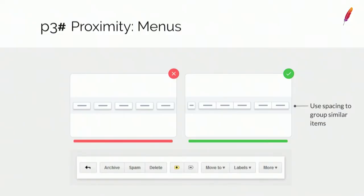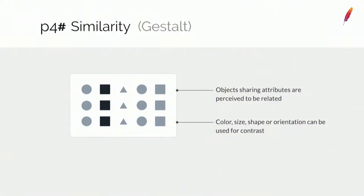Make sure items are actually related and not just grouped for visual reasons. Another principle is similarity, which states that objects sharing attributes are perceived as related. You can play with color, size, shapes, or orientation. If you look at a picture and your brain tries to read it by lines, it's much harder because it naturally reads by columns due to similarity.